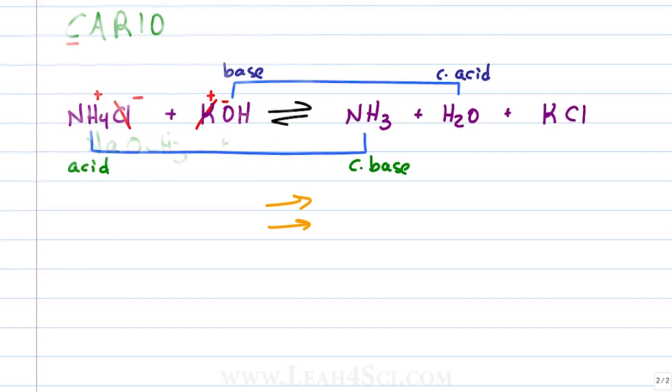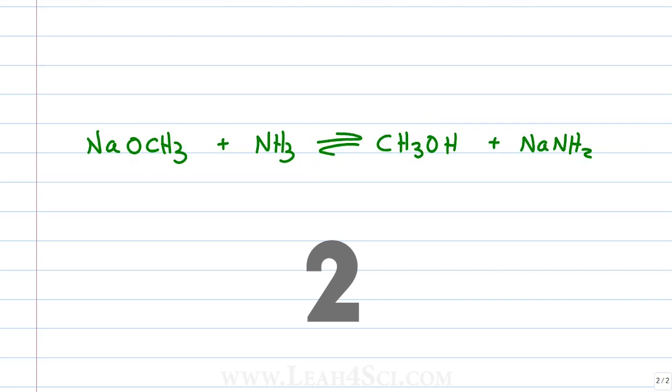Ready to try another one? Pause the video, see what you come up with, then let's break it down. We're asked to find if equilibrium is going to favor the right or the left in this acid base reaction. So let's use the mnemonic KARYO but first identify the species. NaOCH3 goes to CH3OH, NH3 goes to NaNH2.